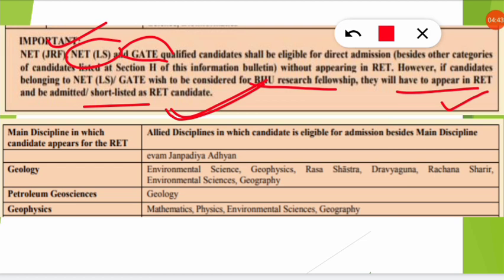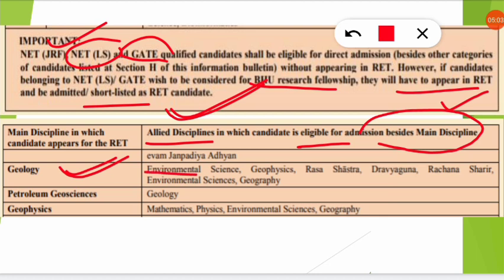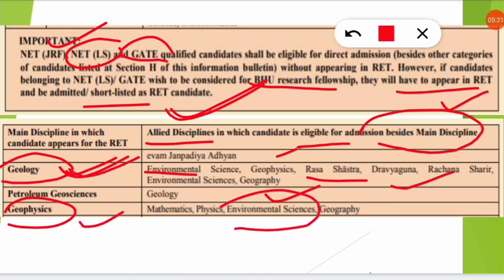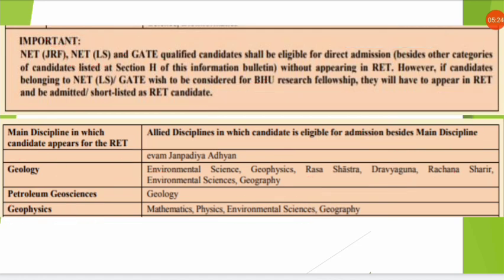Another important point is about allied disciplines. If you apply for geology and qualify the exam or interview, you are also eligible for admission in related disciplines besides the main one. For example, qualifying geology or geophysics can also make you eligible for environmental science, geophysics, and Rasa Shastra PhD admissions. However, this would be very difficult for environmental science students since geophysics and geology are completely different subjects.